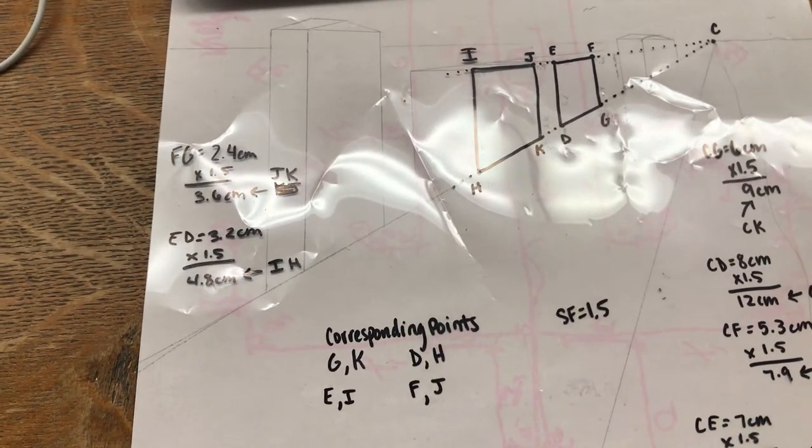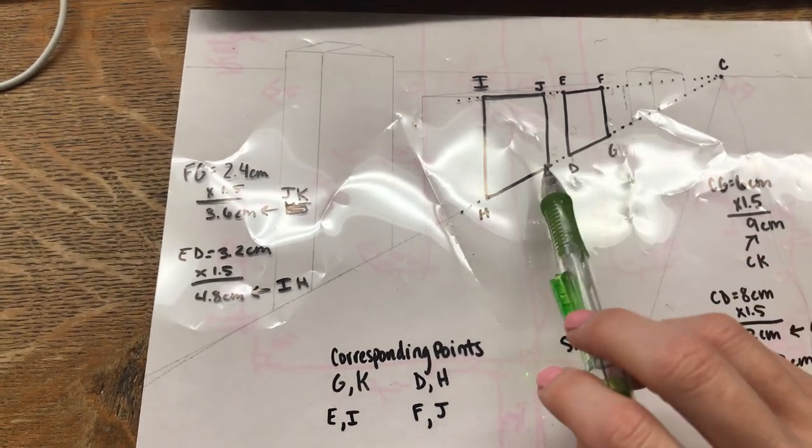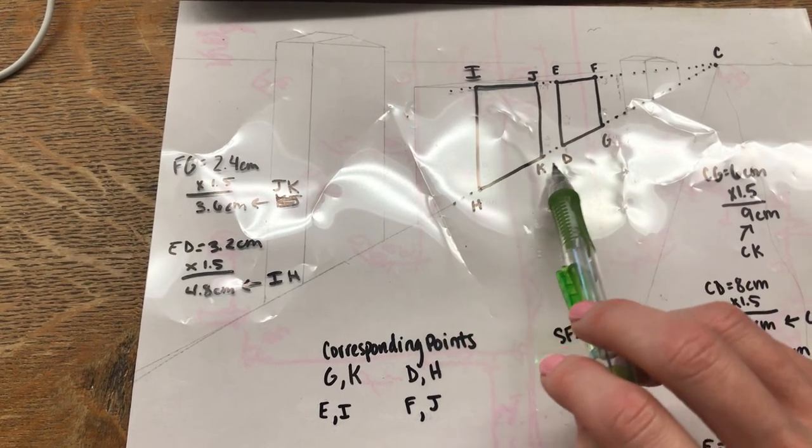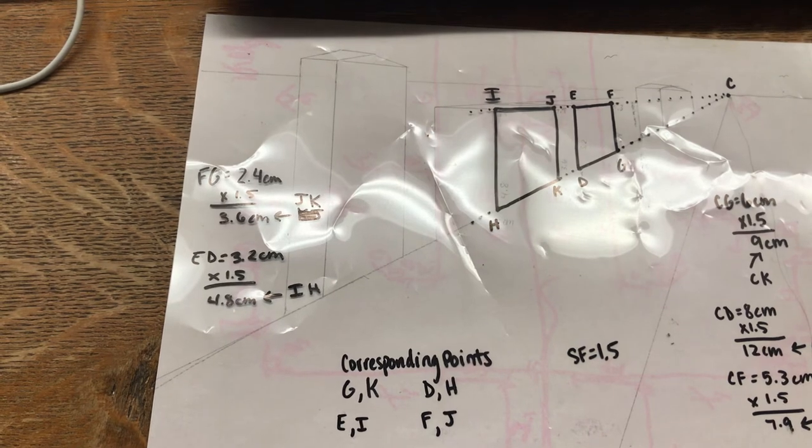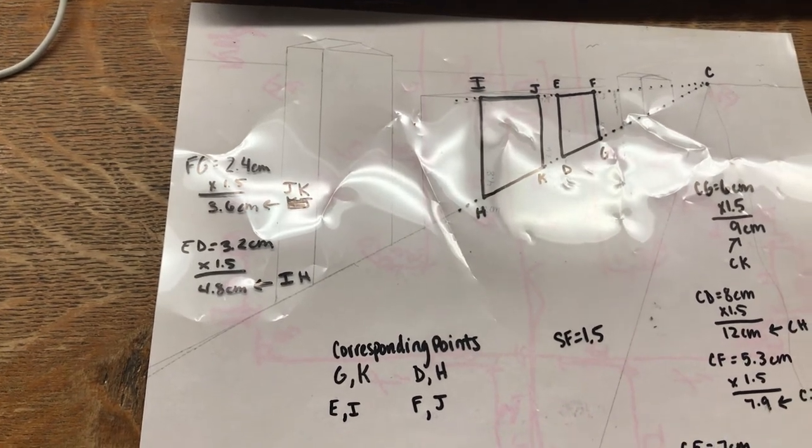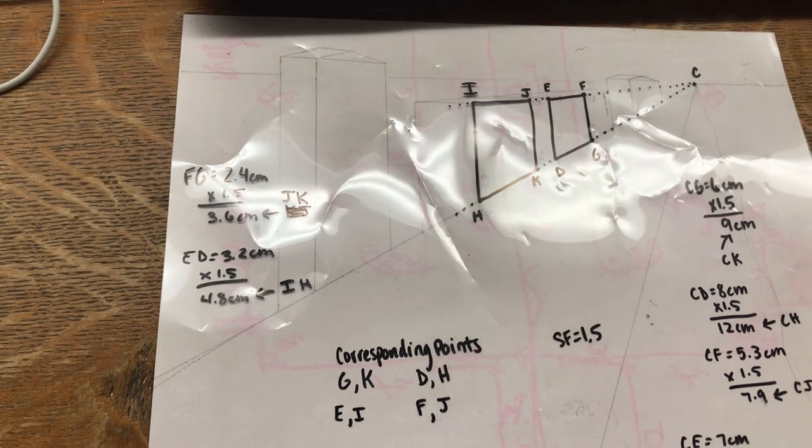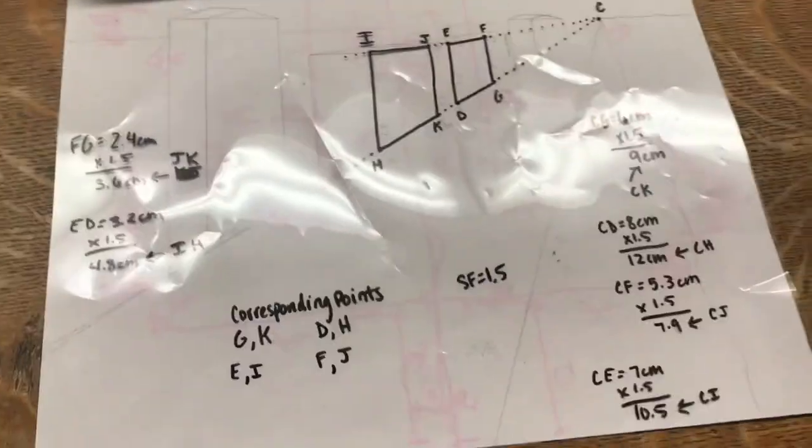And list the corresponding points, points that are corresponding to each other. So like G is corresponding to K in the new one, or you could say G and G prime, D and D prime, and so on if you wanted to use the prime notation. Okay, I think that is it. Have fun.